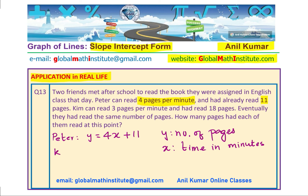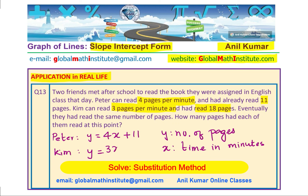Now let us look at Kim. The information for Kim is that she can read 3 pages per minute and had read 18 pages. So for Kim, the number of pages read will be given by the equation y equals 3x plus 18. The values 18 and 11 are fixed — even if they do not read further, they have already read that many. The question becomes: how much time will it take for them to read the same number of pages?